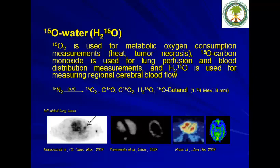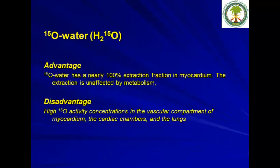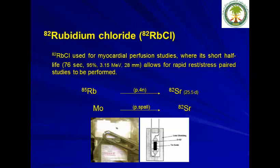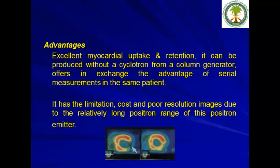O-15 water is another FDA-approved radiopharmaceutical, used for measuring metabolic oxygen consumption in the heart, tumors, and necrosis. Advantages include nearly 100% extraction in the myocardium; however, a disadvantage is oxygen-15 activity concentration in the vascular compartment of the myocardium. Rubidium-82 is a generator with a 30-day parent half-life, producing rubidium-82 with a 72-second half-life. Advantages include excellent myocardial uptake and retention and production without a cyclotron from a column generator. Limitations include high cost and poor resolution images due to the relatively long positron range compared to ammonia.